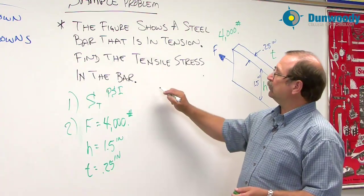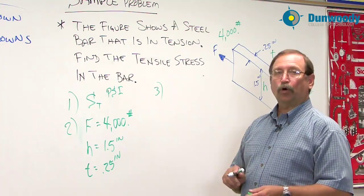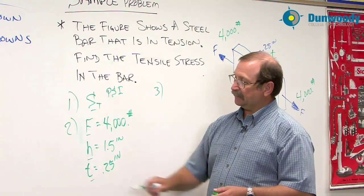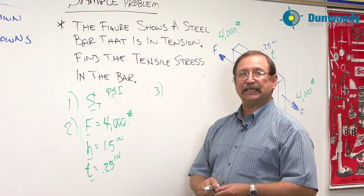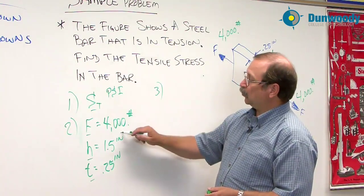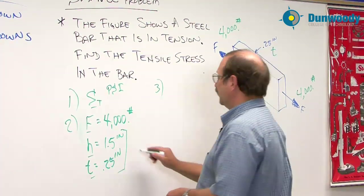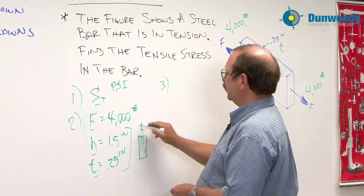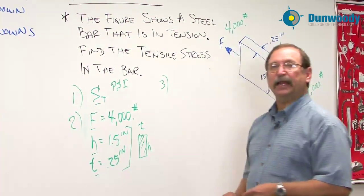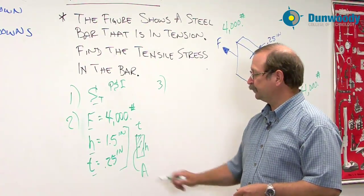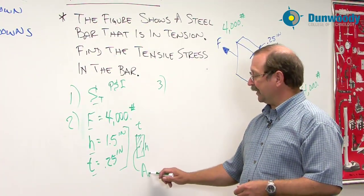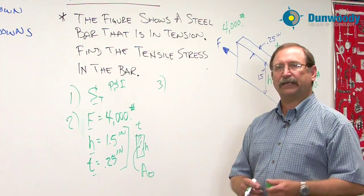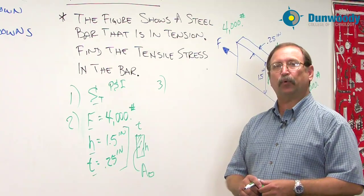In our solution, we're going to be taking a look at the S sub T, the F, the h, and the t. We should know at this point in time that this rectangular area is the area of a rectangle. We put an A and then a sub-box rectangle so that we keep track of what shape we're dealing with.